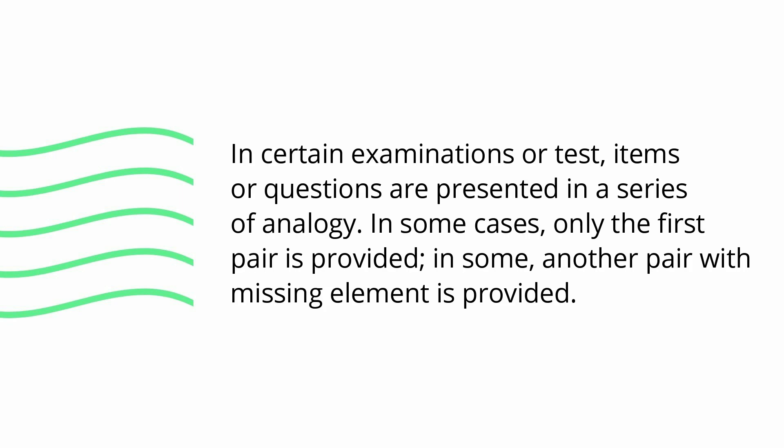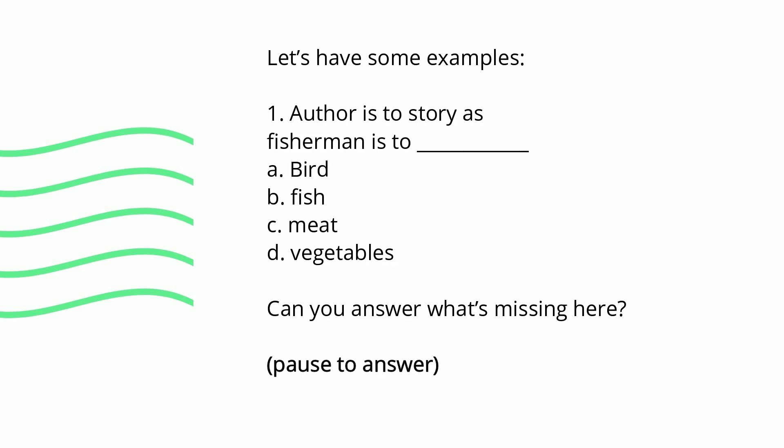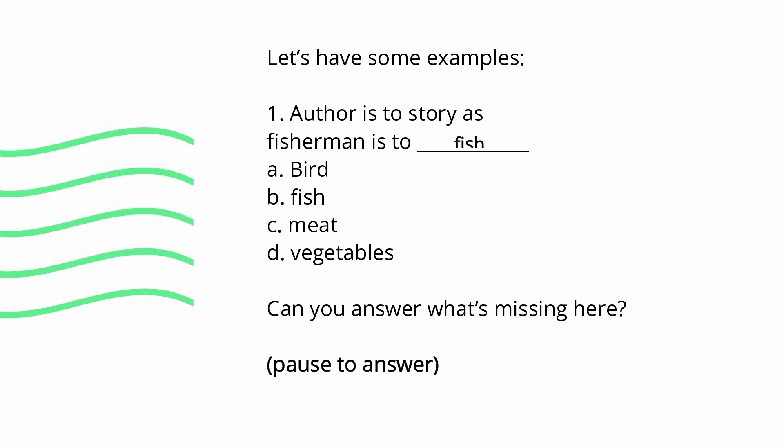In certain examinations or tests, items or questions are presented in a series of analogies. In some cases, only the first pair is provided; in some, another pair with a missing element is provided. Let's have some examples. Author is to story as fisherman is to... What's missing here is fish.